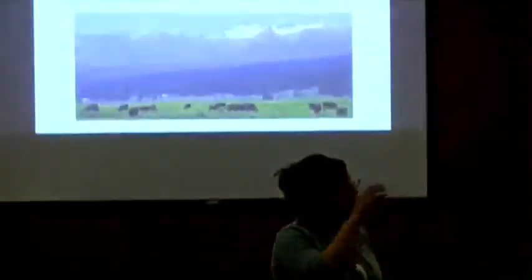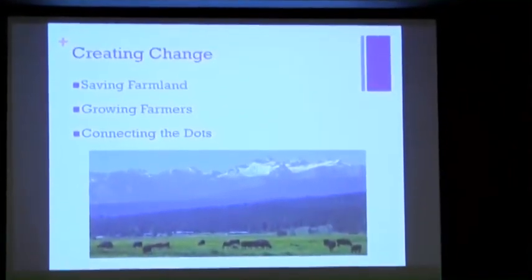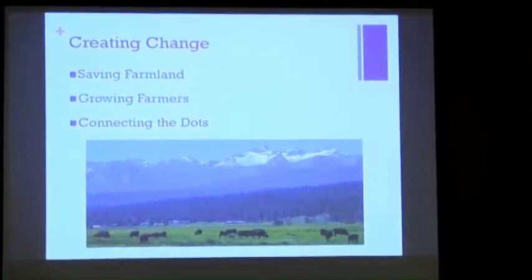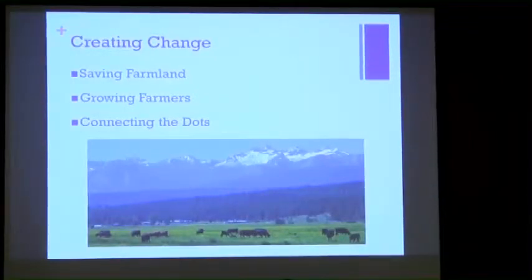So to create change, we have three major program areas at the Community Food and Agriculture Coalition: saving farmland, growing farmers, and then a bunch of different projects that connect the dots.